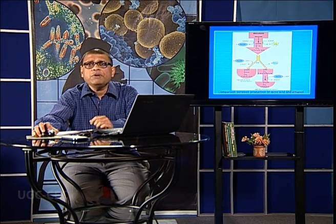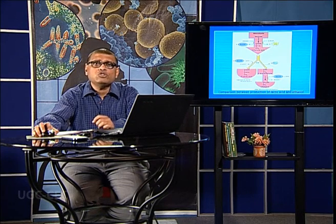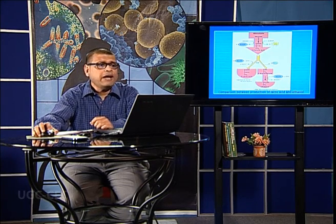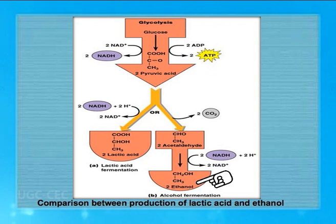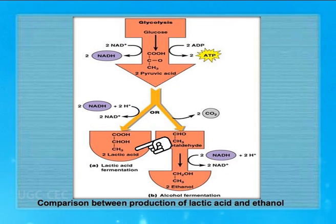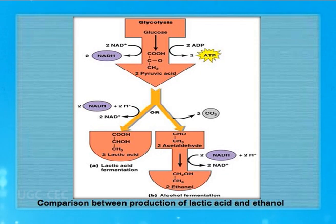Apart from ethyl alcohol, bacteria can also produce lactic acid. Glucose is converted to pyruvic acid; by alcohol fermentation it becomes ethanol, but some bacteria convert pyruvic acid to lactic acid, utilizing reduced energy. Lactic acid and alcohol fermentation together produce heterolactic fermentation, while pure lactic acid is produced by homofermentation.